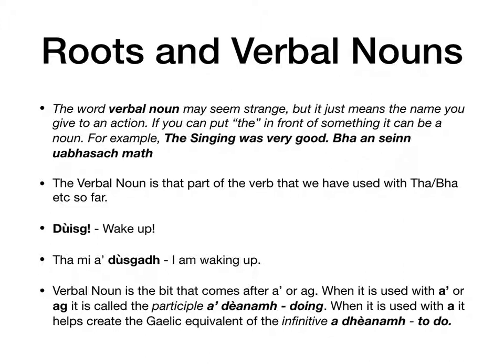For example, a very common one: tha mi a' dùsgadh — I'm waking up. Dùsg is the verbal noun — that's the bit that comes after the apostrophe. The verbal noun is used in two different ways in Gaelic. It is technically called the participle — that's the doing, the thing you're participating in: tha mi a' dèanamh cèic — I'm doing/making cake. Whereas used with 'a' (just 'a', not with an apostrophe, since the apostrophe means a letter is missing) it creates the Gaelic equivalent of the infinitive: a dhèanamh — to do.